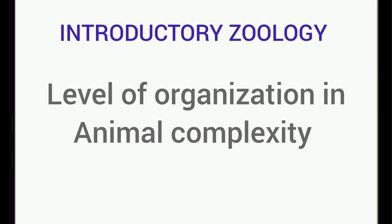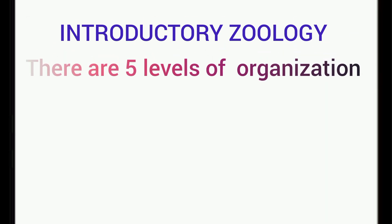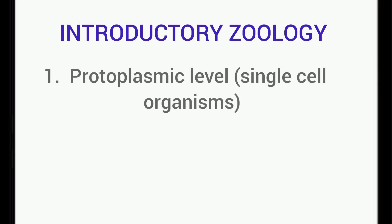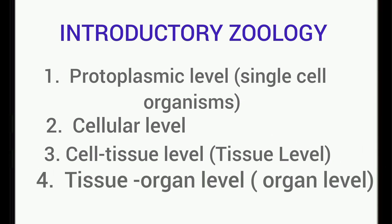Let's talk about the levels of organization in animal complexity. There are five levels of organization in animal complexity and each level is actually more complex than the one before. The five levels are the protoplasmic level of organization, cellular level of organization, cell tissue or simply tissue level of organization, tissue organ or simply organ level of organization, and the organ system level of organization.